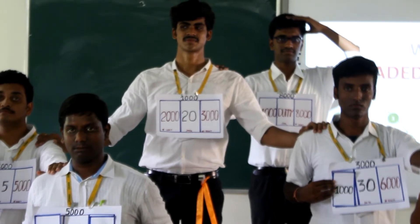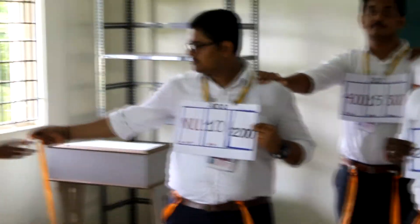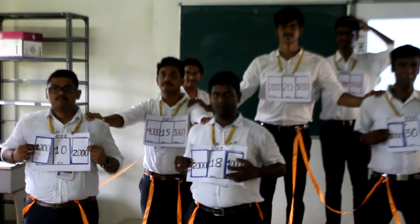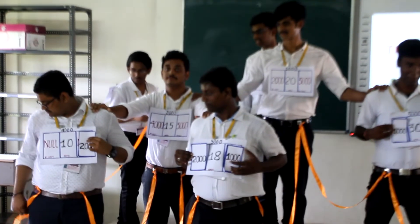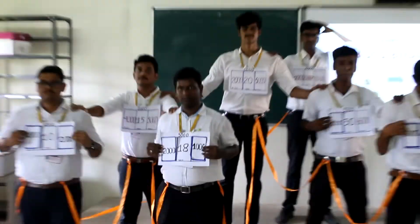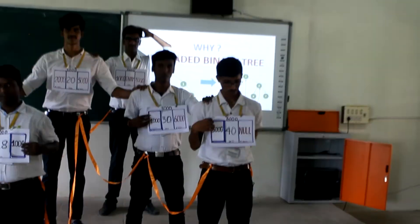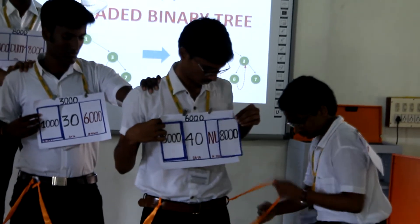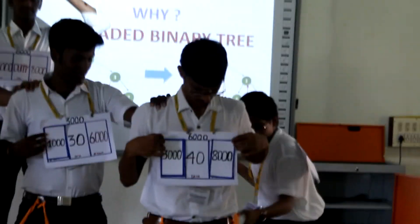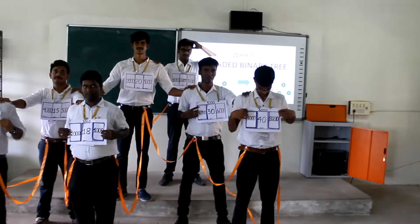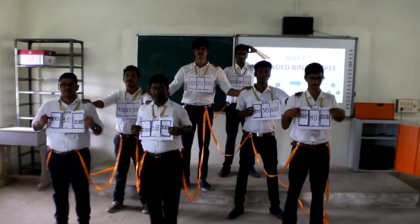The right null pointer of element 40 is threaded to the dummy node, and the left null pointer of element 10 is threaded to the dummy node. This is the full threaded binary tree.